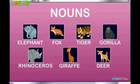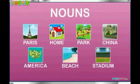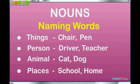Deer is also a name used for an animal and is a noun. School is a naming word for a place. Paris, home, park, China, America, beach, stadium, and Pakistan are all places and are nouns.